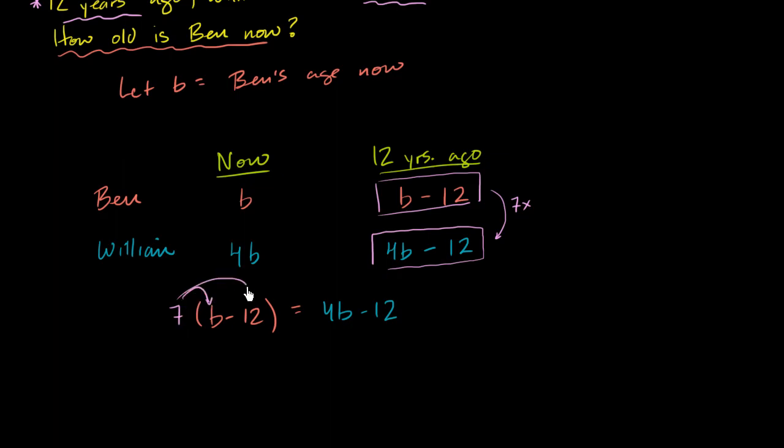So seven times b, seven times essentially negative twelve. So we have 7b minus seven times twelve, let's see, eighty-four is going to be equal to 4b minus twelve.